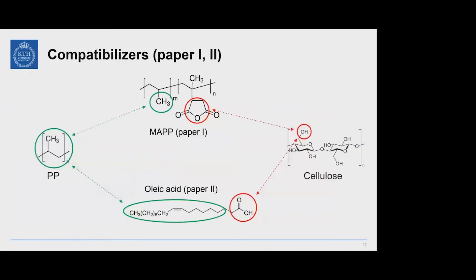In my study, we used two different coupling agents. In the first paper, we used maleic anhydride grafted polypropylene, abbreviated as MAPP, and in the second one, we used oleic acid. There is a common feature: both have a reactive group that can react with cellulose, and on the other hand, a long fatty chain that fits well with the surrounding PP matrix, allowing good interfacial adhesion between PP and cellulose.